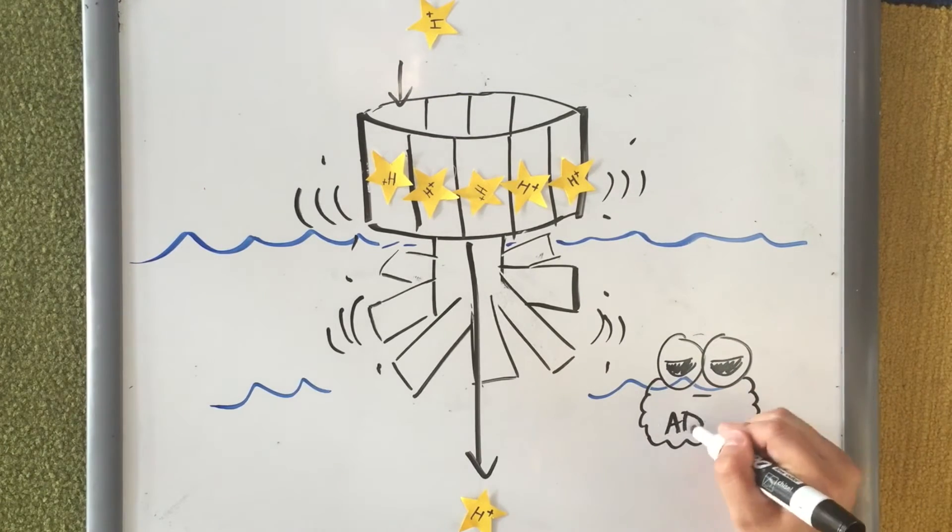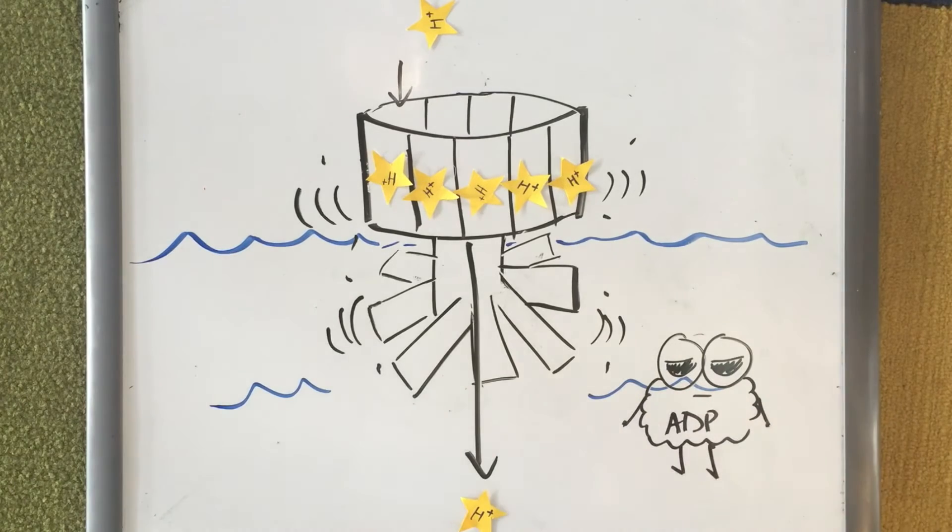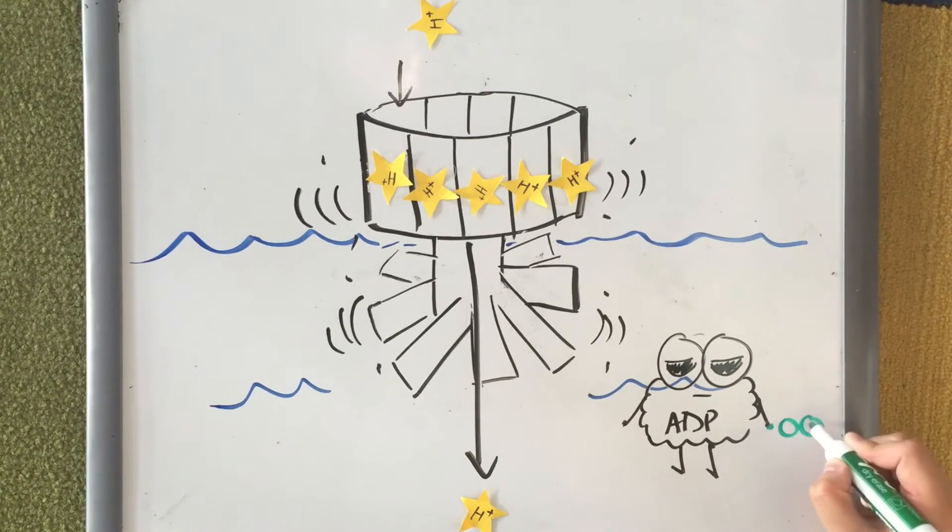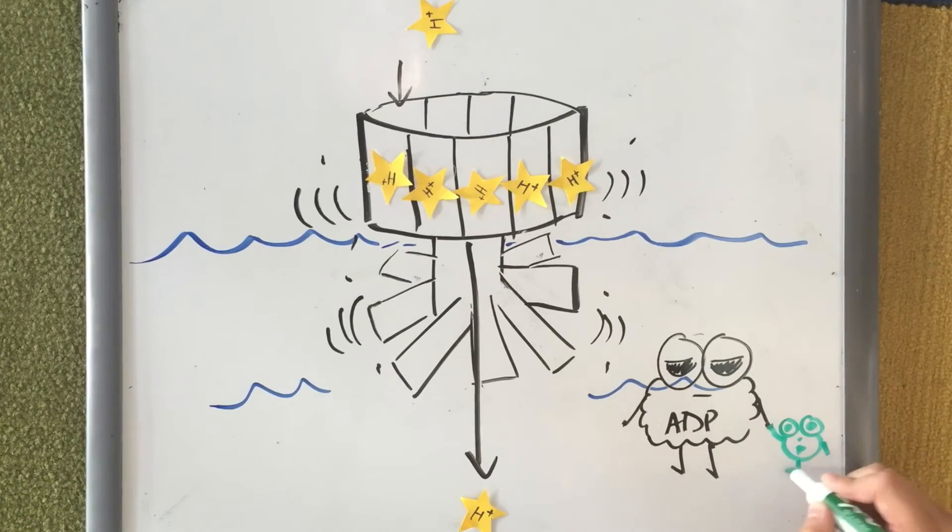The gradient powers a spinning ride, ATP synthase. As hydrogen ion stars drift back to Earth, they attach the spinning ride, which creates energy to run a rotor.